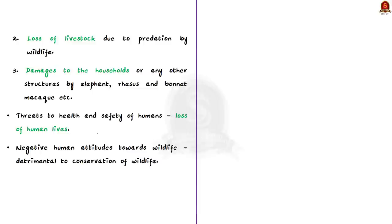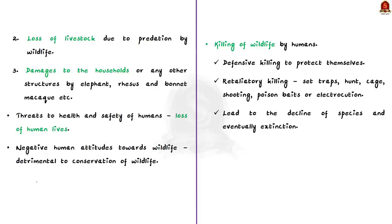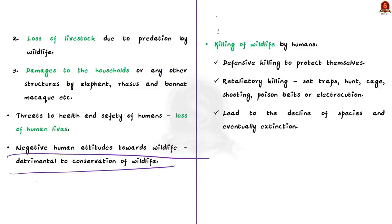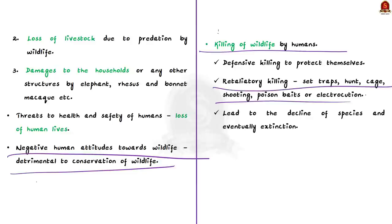The second consequence is threats to human health and safety, including loss of human lives. Animals like elephant, lion, and tiger attack and kill humans for defense or food. These instances lead to negative human attitudes, causing decreased appreciation of wildlife and severe detrimental effects on wildlife conservation. This leads to the third consequence — killing of wildlife by humans. This could be defensive killing when dangerous animals threaten humans, but the more dangerous reason is retaliatory killing — when animals kill humans, people set traps to kill the animal.